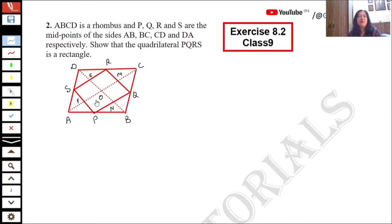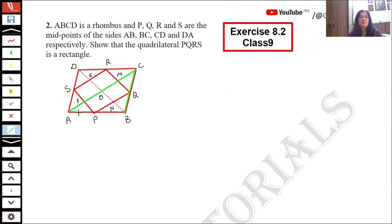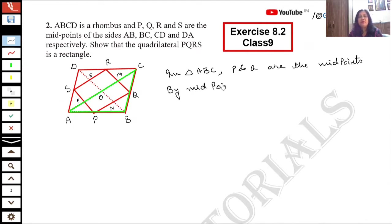First of all, we will prove that PQRS is a parallelogram. To do this, we will consider triangle ABC. In triangle ABC, P and Q are the midpoints of sides AB and BC. By the midpoint theorem, we will apply the midpoint theorem here.